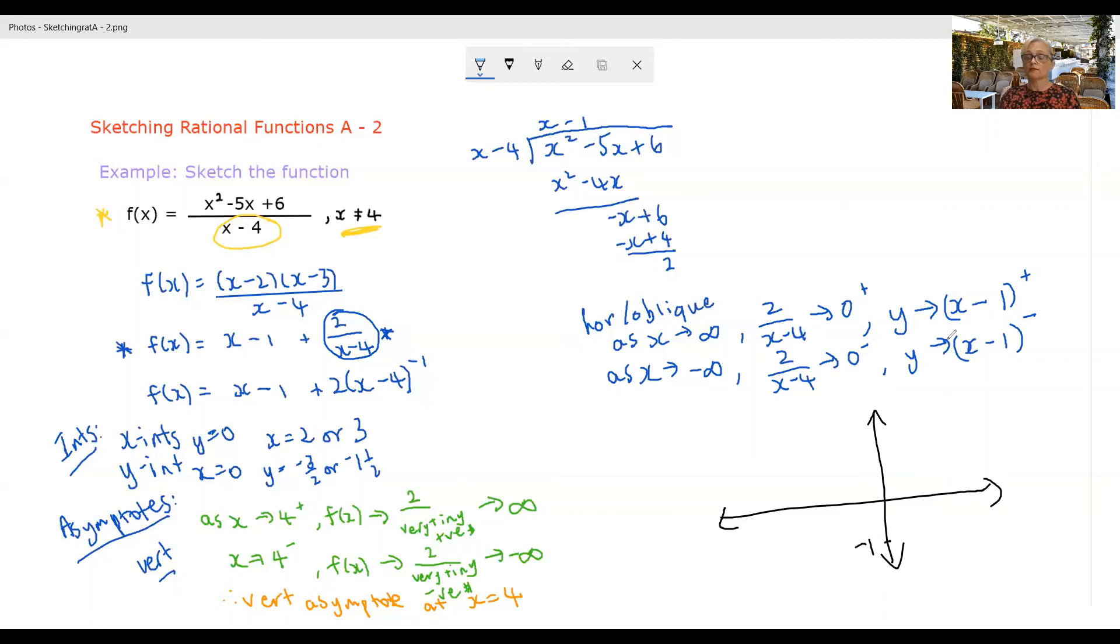If x is zero, y is negative one. If y is zero, x is one. So we've got this sort of situation here.